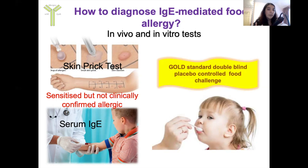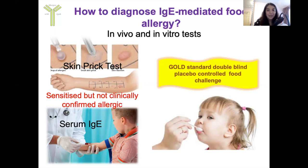Historically, what has been done to diagnose food allergy is sensitization tests — though these are not clinically confirmed food allergy, they give an indication of whether someone is allergic. One example is a skin prick test, where the skin is pricked and a droplet of allergen is applied; if the skin swells, the subject is said to be sensitized. Another is a serum IgE test, where a patient's blood is taken and the serum is mixed with allergen — if IgE antibodies specific to the allergen bind, they are again said to be sensitized.